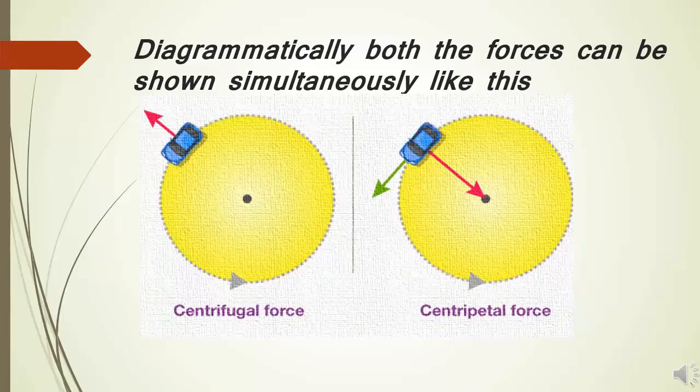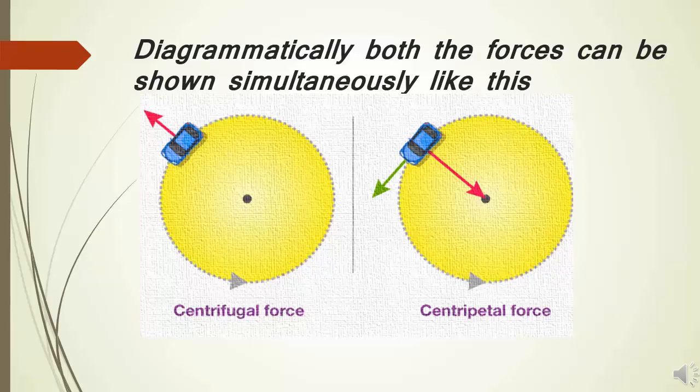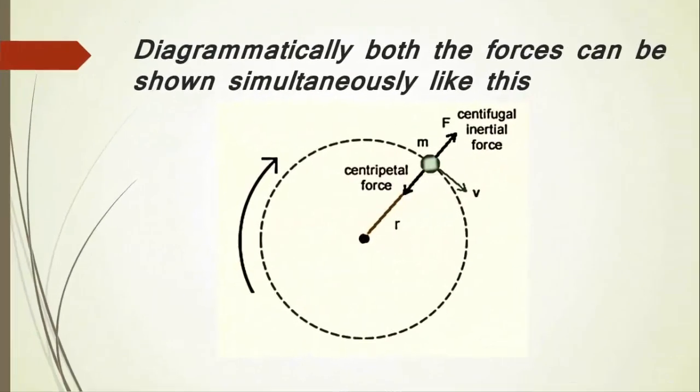This can be understood by a simple example. Consider a vehicle moving on a curved road. Therefore, the person inside will experience an outward force due to centrifugal force. But the vehicle which is turning along the road due to the friction of tyre and the road surface will experience the centripetal force. So both the forces are acting simultaneously.